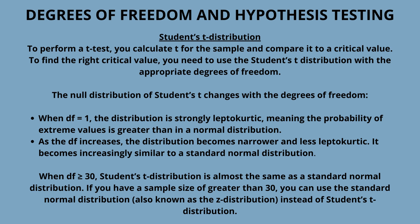The null distributions of Student's t, chi-square, and other test statistics change with the degrees of freedom, but each changes in different ways. For Student's t distribution: to perform a t-test you calculate t for the sample and compare it to a critical value. To find the right critical value you need to use the Student's t distribution with the appropriate degrees of freedom. When df = 1, the distribution is strongly leptokurtic, meaning the probability of extreme values is greater than in a normal distribution. As df increases, the distribution becomes narrower and less leptokurtic.